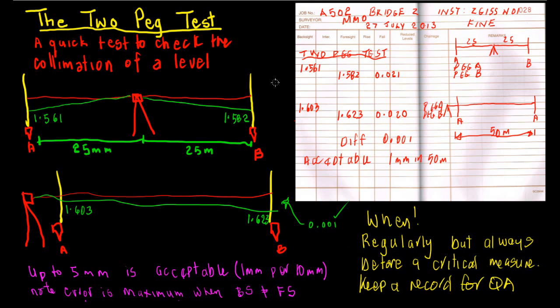So provided you can keep your backsights and foresights equal, you can use a level that is slightly out of collimation.